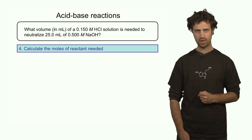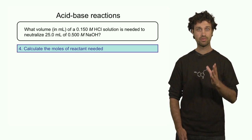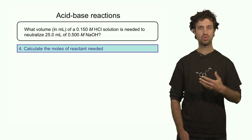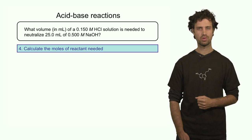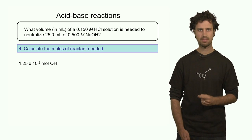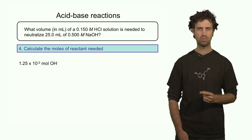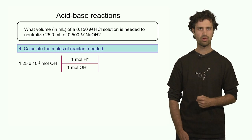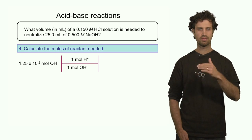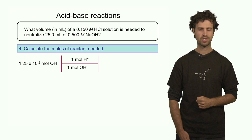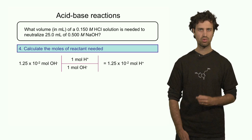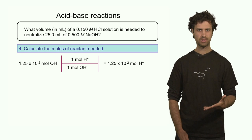Now we know the number of hydroxide anions, and we can convert that into the number of protons we need to add to neutralize the solution. 1.25 × 10⁻² moles of hydroxide anions, times the mole ratio of protons to hydroxide anions — 1 to 1 — gives us 1.25 × 10⁻² moles of protons.